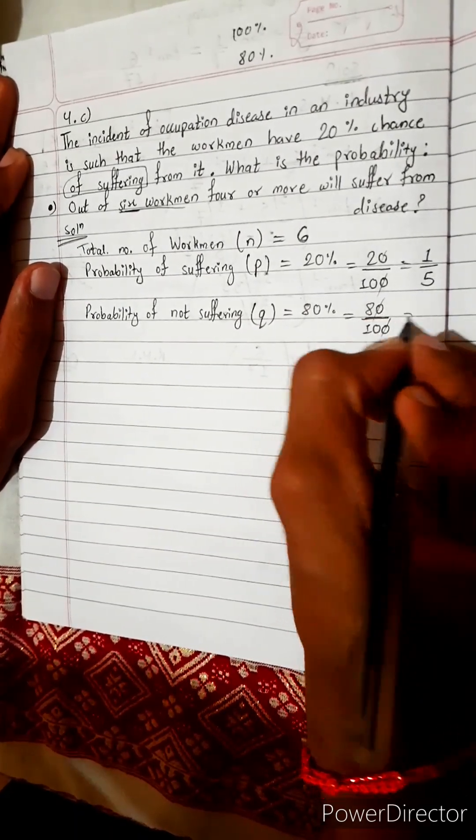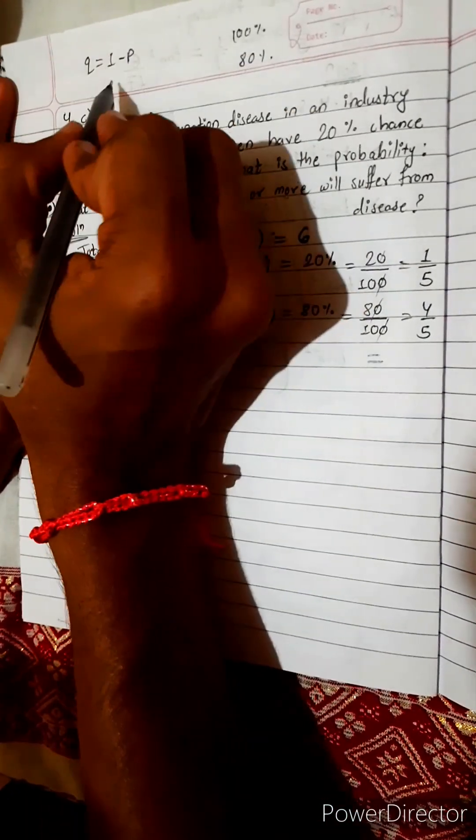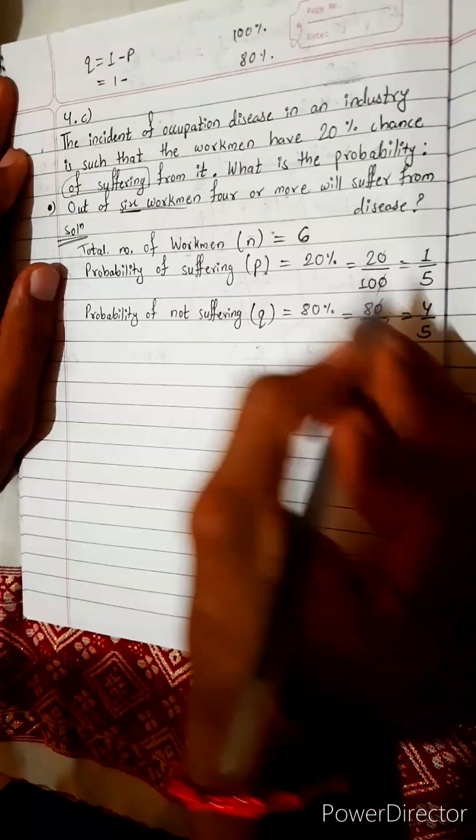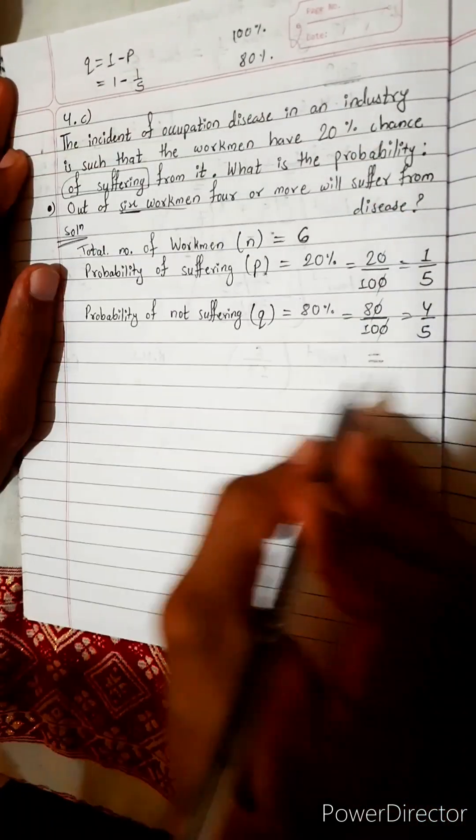Or you can do like this also. Q equals to 1 minus P. This is the formula. 1 minus 1 by 5, this is 4 by 5.